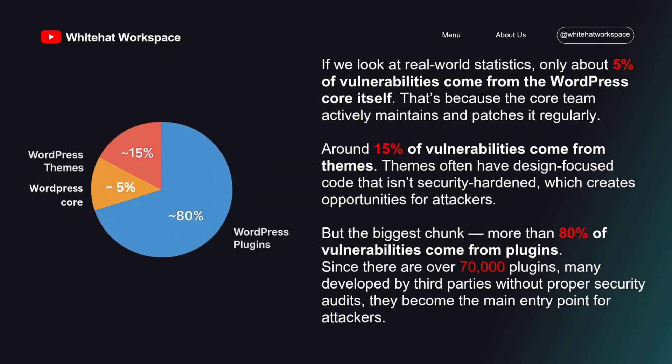Now that we know WordPress is a huge target, let's break it down further and see where most vulnerabilities actually come from. Looking at real-world statistics, only about 5% of vulnerabilities come from the WordPress core itself, because the core team actively maintains and patches it regularly. Around 15% of vulnerabilities come from themes — themes often have design-focused code that isn't security-hardened, which creates opportunities for attackers. But the biggest chunk — more than 80% of vulnerabilities — come from plugins. Since there are over 70,000 plugins, many developed by third parties without proper security audits, they become the main entry point for attackers. So as bug bounty hunters, our focus will be on enumerating plugins and themes, identifying outdated or vulnerable ones, and then exploiting them safely in a lab setup.